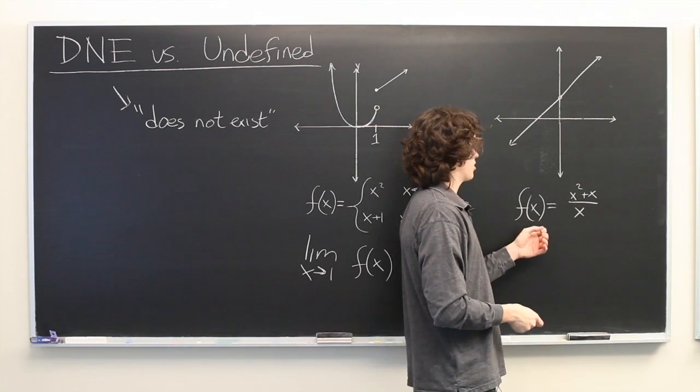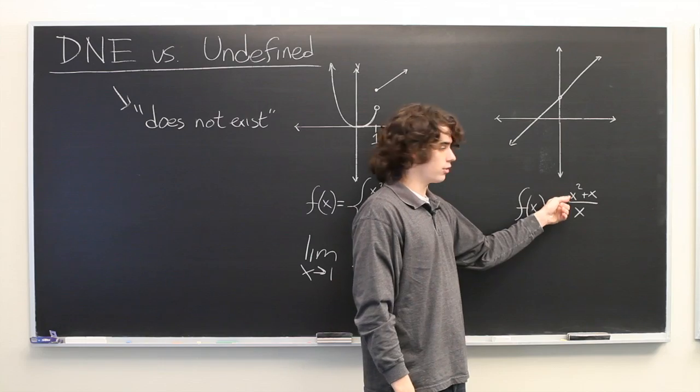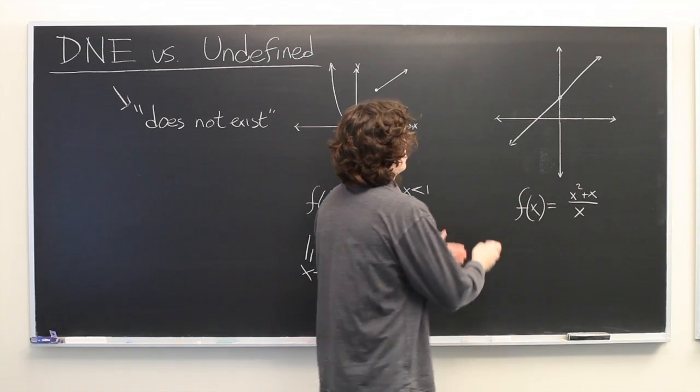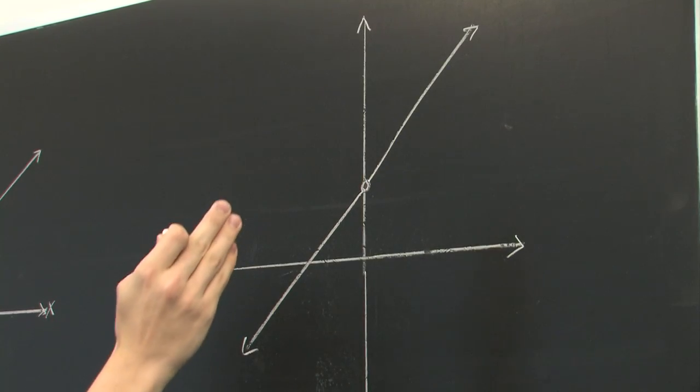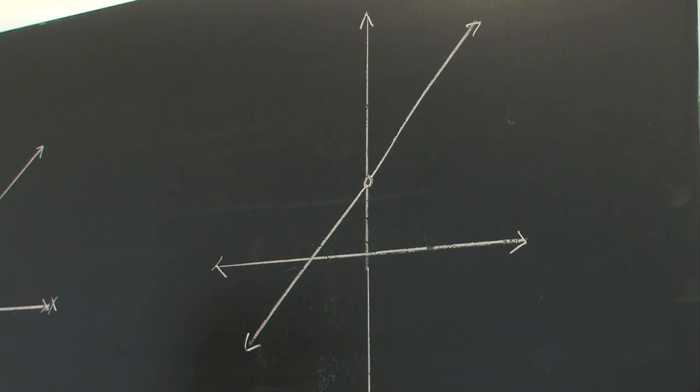Okay, let's look at this next example where we have f of x equals x squared plus x over x. This essentially just gives us the line but there is a hole or a removable discontinuity at x equals 0.